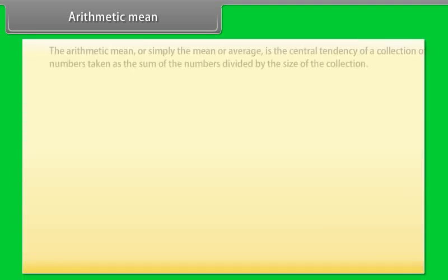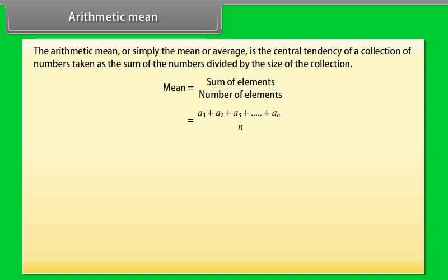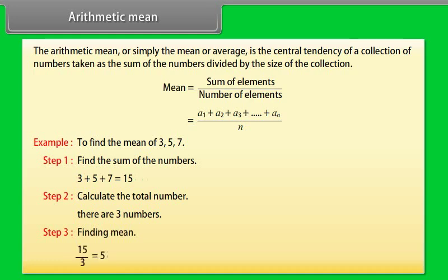The arithmetic mean, or simply the mean or average, is the central tendency of a collection of numbers taken as the sum of the numbers divided by the size of the collection: mean = sum of elements / number of elements = (A1 + A2 + A3 + ... + An) / n. Example: Find the mean of 3, 5, and 7. Step 1: sum = 3 + 5 + 7 = 15. Step 2: total count = 3. Step 3: mean = 15/3 = 5.